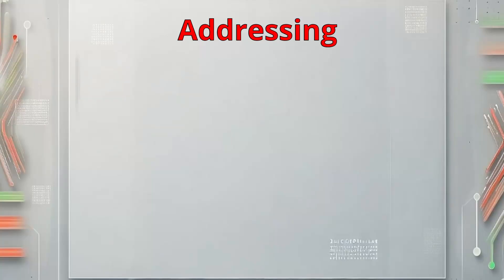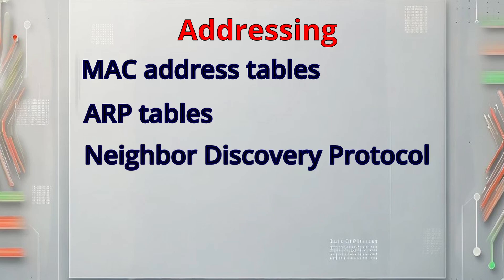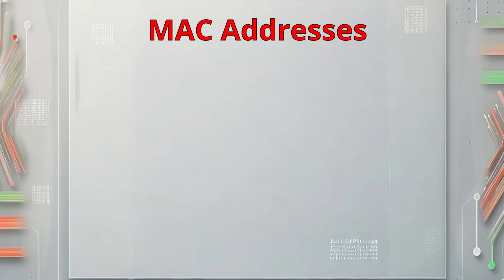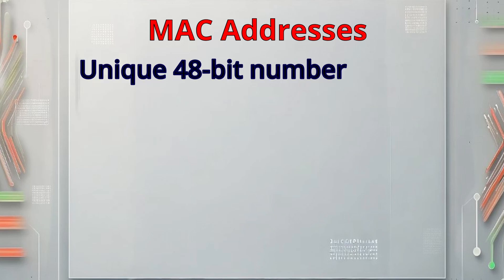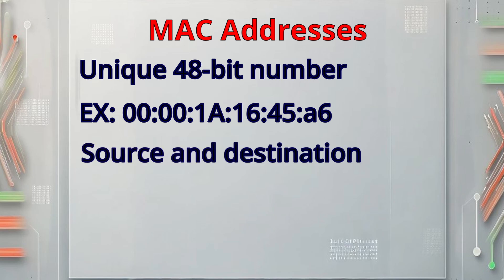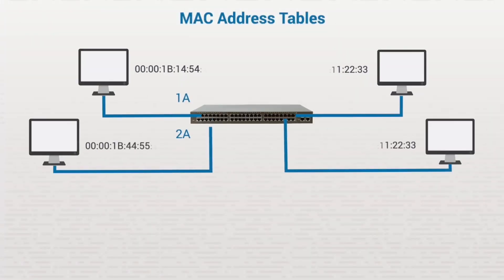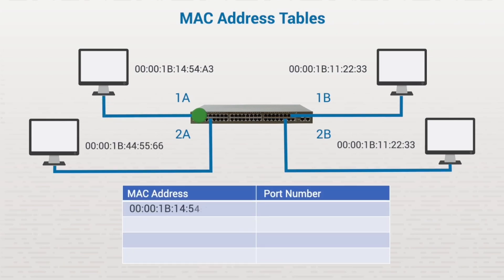Now that we've gone over VLAN's physical topology, let's make sure we understand how packets are addressed to the correct destination. This is done through MAC address tables, ARP tables, and Neighbor Discovery Protocol, or NDP. Every network hardware device has a unique identifier — a 48-bit number known as the MAC address — used to know where a packet came from and where to send it. Switches create tables in the LAN populated with MAC addresses. When you subdivide a switch into VLANs, each VLAN behaves as if it's an independent switch and creates its own MAC address table.